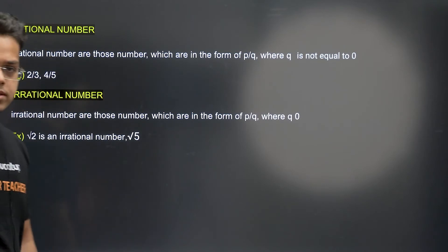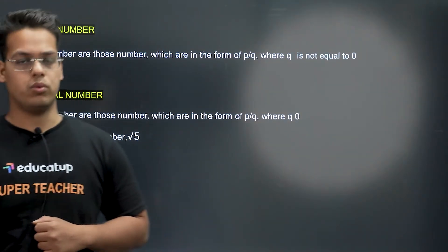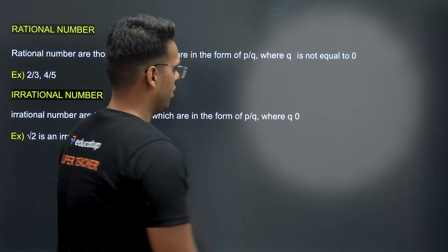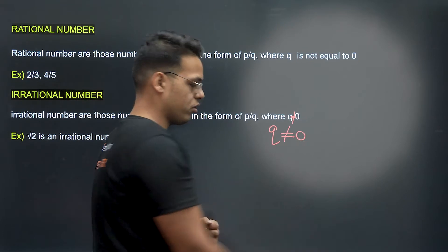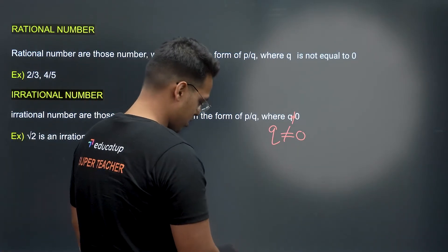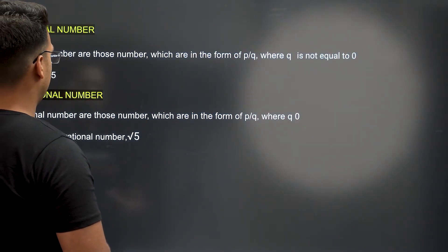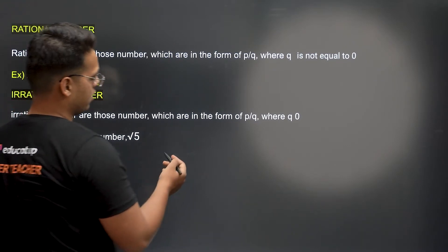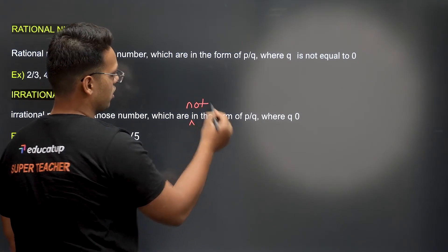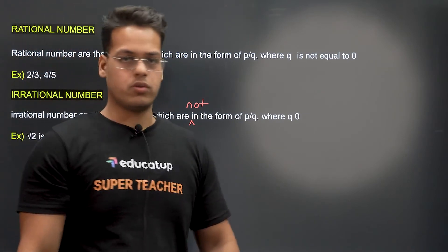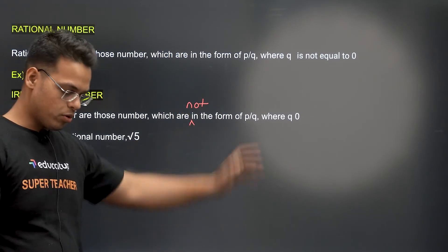Now what about irrational numbers? Irrational numbers are those numbers which are NOT in the form of P upon Q, where Q is not equal to zero. Please make a correction here — the definition should say 'which are NOT in the form of P upon Q.' So this is all about irrational numbers.